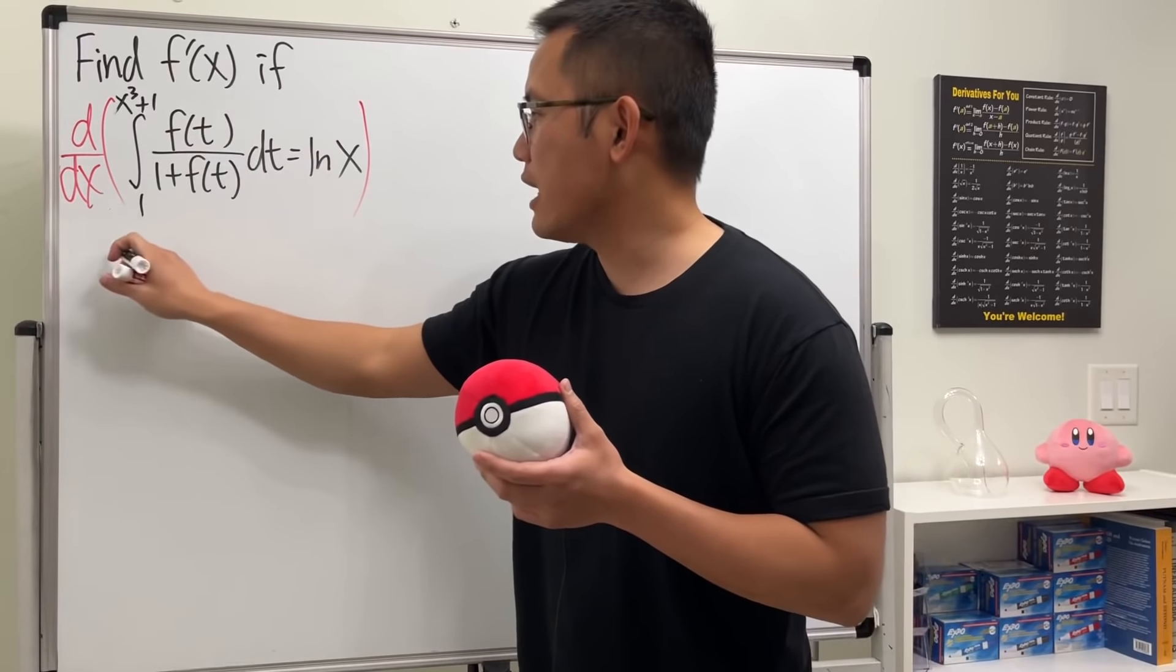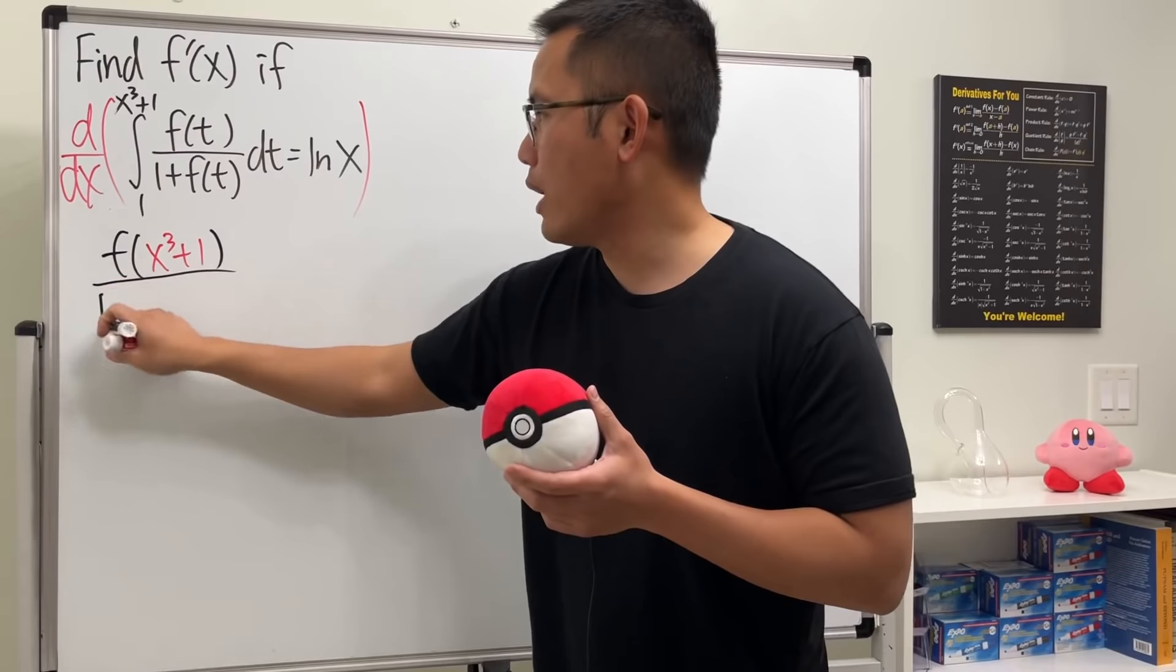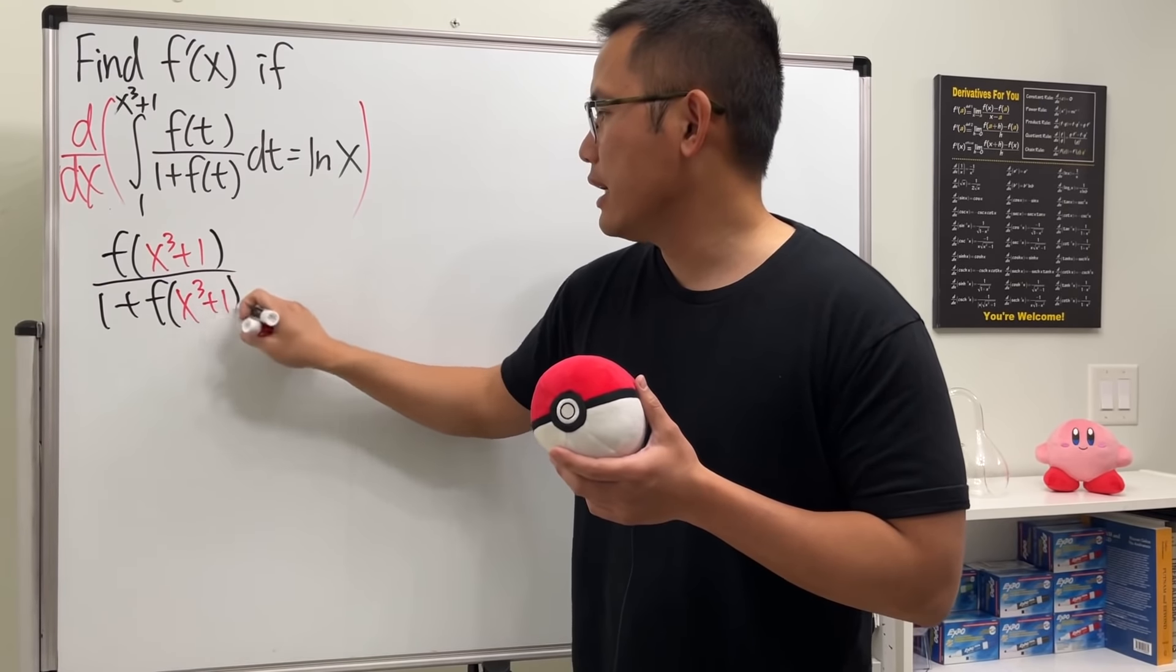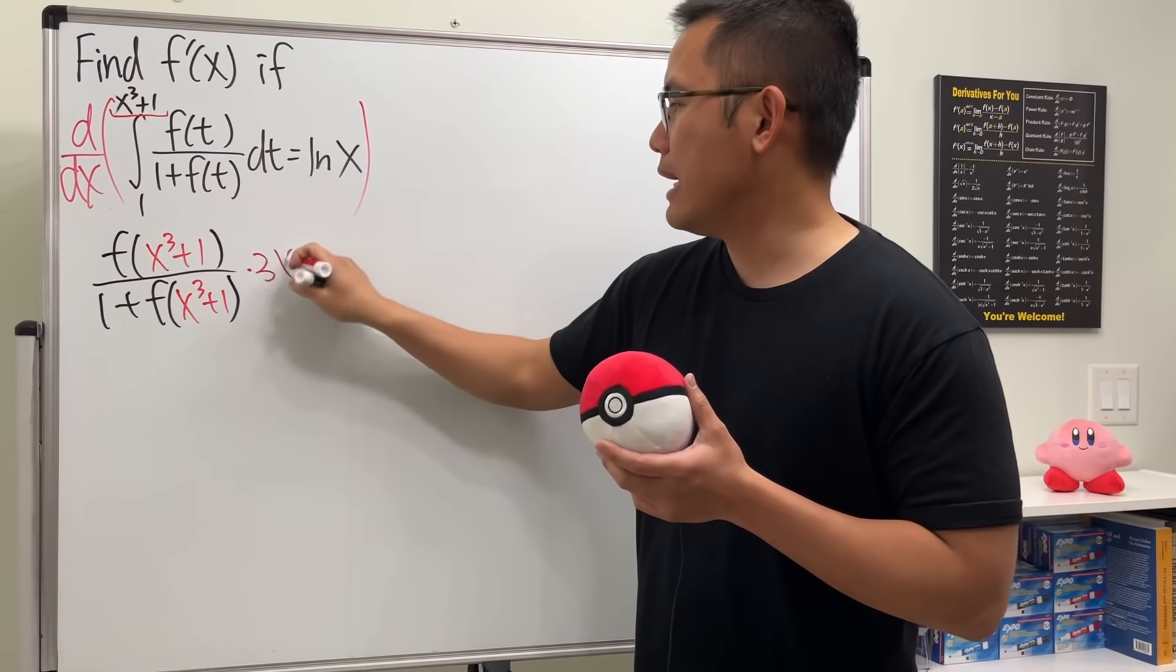So we will just get f(x^3 + 1) over 1 + f(x^3 + 1). And of course, use the chain rule, because you see that the derivative of this is 3x^2, so it matters.